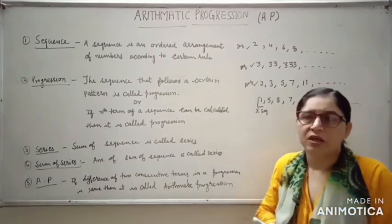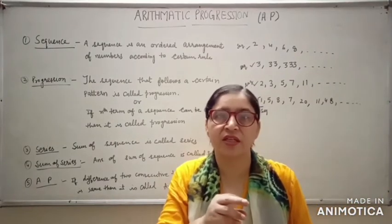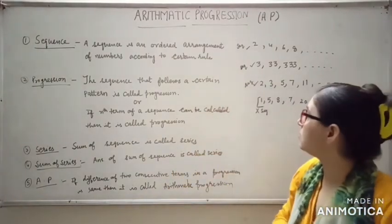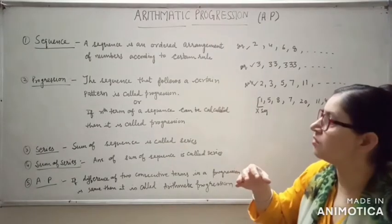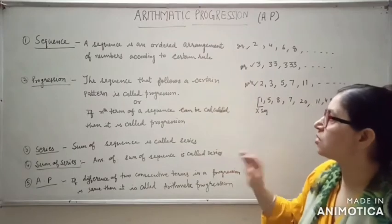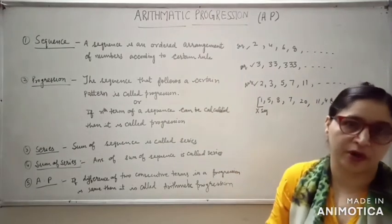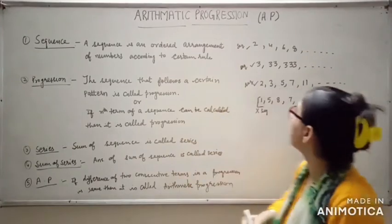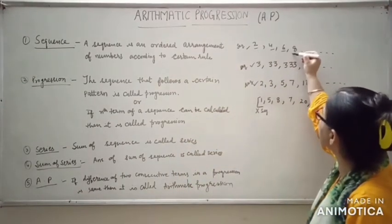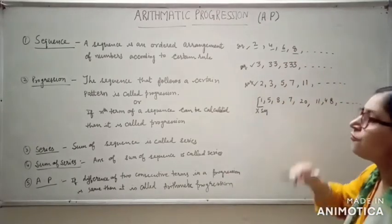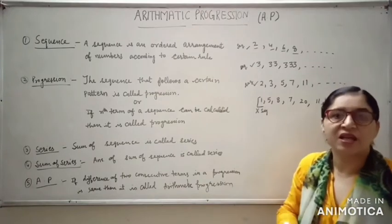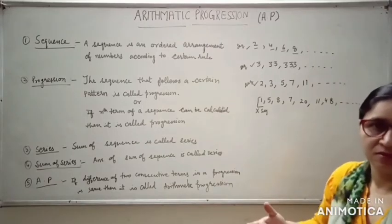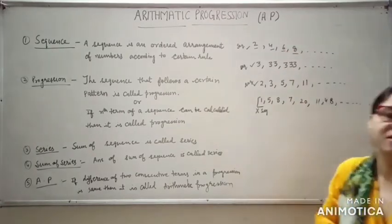Now come to progression. Progression is also a sequence, but it is a particular type of sequence. The important point converting a sequence to a progression is: if the sequence follows a certain pattern — meaning we are able to calculate its nth term — then it is known as a progression. All the elements are terms: first term, second term, third term, and so on. If we can find the nth term by identifying the pattern, then it is a progression.